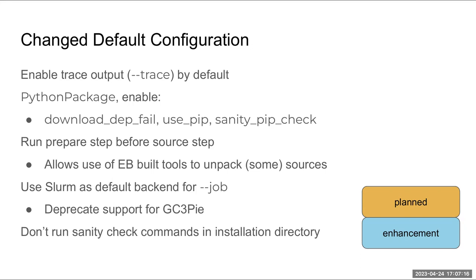There are changes to Python package installs — some things you're currently specifying in EasyConfigs you'll be able to remove because they'll become the default. We'll also run the prepare step before the source step, which will allow you to use build tools to do unpacking. For non-standard formats like RAR, EasyBuild could supply an unpacker — though there's a bootstrapping consideration for the very first thing you need to unpack. We're also changing to Slurm as the default job engine.